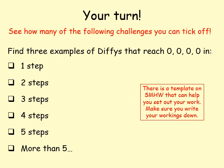Now it's your turn. See how many of these challenges you can tick off. I'd like you to find three examples of Diffys that reach 0, 0, 0, 0 in one step, maybe two steps, three steps, four steps, five steps — you could even go for more than five steps. Think about what numbers you could use; start by picking between 1 and 50. If you want to make those numbers bigger because it's not working, please feel free. There is also a template on Show My Homework to help you set out your work. Do write your workings, and calculators are definitely allowed.